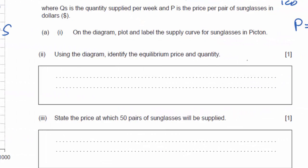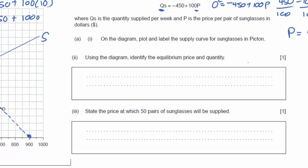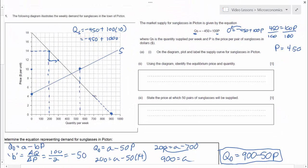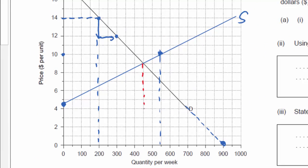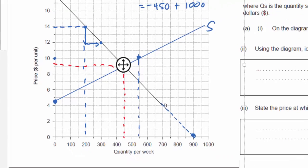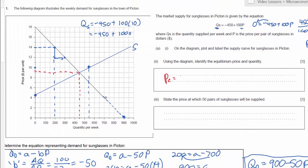The next question says using the diagram identify the equilibrium price and quantity. It doesn't ask me to calculate it but it's pretty easy to see on a graph. The intersection of the supply and demand curve occurs at a quantity of 450 and at a price of $9.00 it looks like. So I can say my PE equals $9.00 and my QE equals 450 sunglasses.